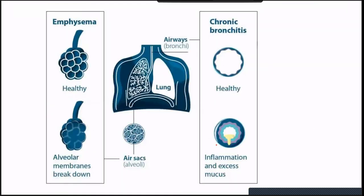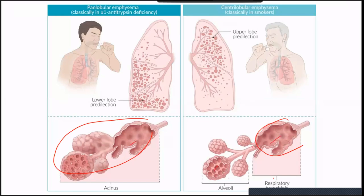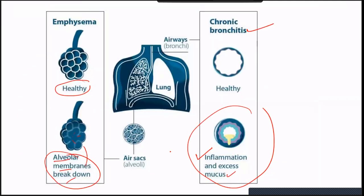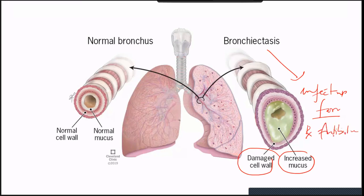Chronic bronchitis has a lot of inflammation — bronchitis is inflammation and excess mucus. Two consecutive months for three years is the definition. In emphysema, the alveolar membrane breaks down — damage to the alveolar membrane, which you can see here in the pathology. Chronic bronchitis has a damaged cell wall and increased mucus, and is always in an infective form, so this patient almost always requires antibiotics. He has a lot of sputum — a lot of infected phlegm.